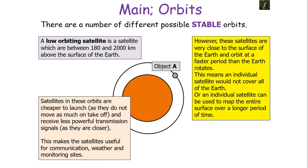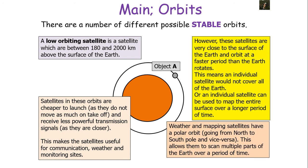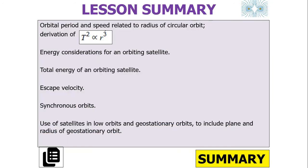Low-orbit satellites are useful for communication, weather monitoring, and mapping. Because they orbit faster than the Earth rotates, a single satellite wouldn't cover all of the Earth, so multiple satellites work together in a network to achieve constant coverage. An individual satellite can map the entire surface over time — weather and mapping satellites often use a polar low orbit going from North Pole to South Pole, allowing them to scan multiple parts of the Earth over time.